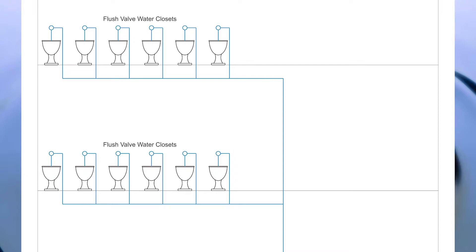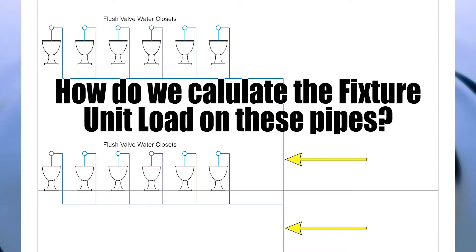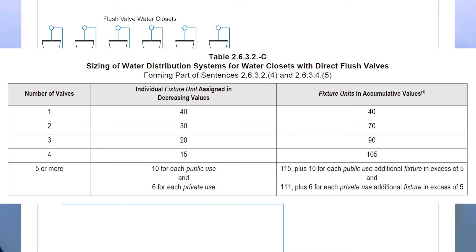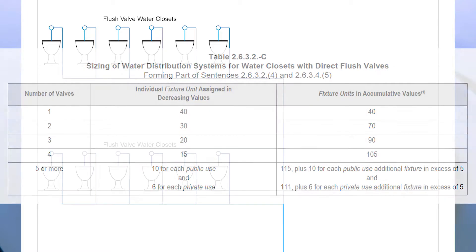Clarification number two: we have direct flush valves on multiple stories. How do we calculate the fixture unit load for these different pipes? In this example I have 12 flush valve water closets, six on each of two different stories. Now let's reference table 2632C to assign a fixture unit value for each of these water closets, and we're going to do both stories simultaneously because we've already done this before in a previous video.